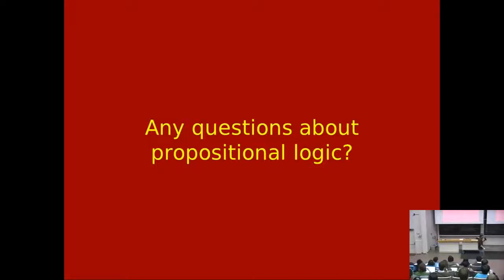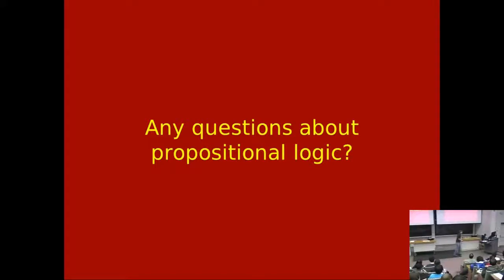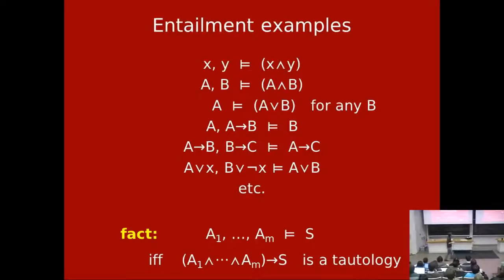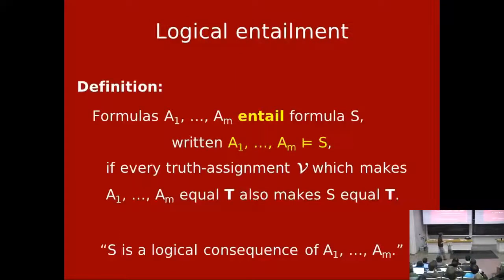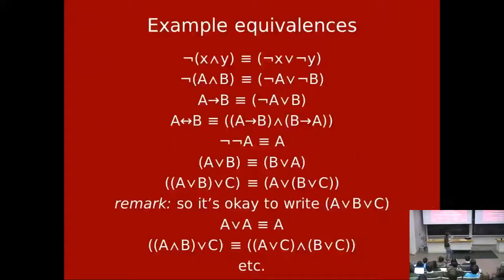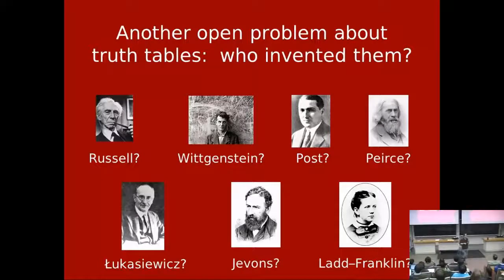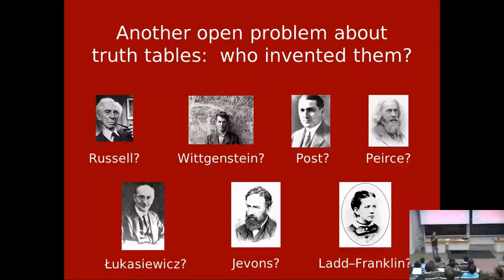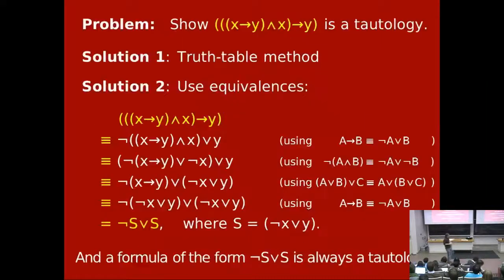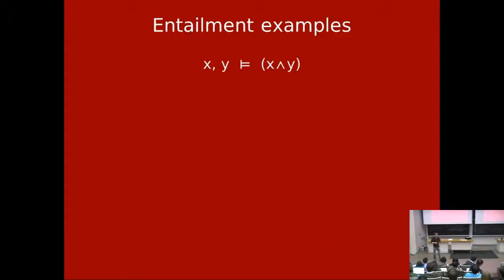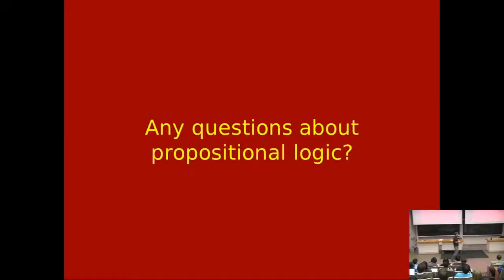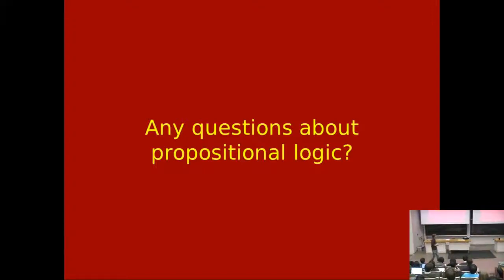Is there any shorthand equivalent to exclusive or? You can express it using what we have: if-and-only-if is true when X and Y have the same truth values, so XOR is the negation — not(X if-and-only-if Y). It's a historical convention that we chose these five: and, or, not, implies, and if-and-only-if. It's actually interesting to think about what other connectives you could choose, or whether you can get away with fewer and still express all concepts.